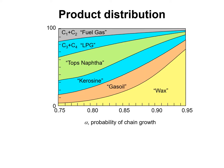Here is the graph showing the product distribution in a Fischer-Tropsch process. We produce a range of products from waxes, gas oil, kerosene, naphtha to LPG and fuel gas. Typically, it is desired to have a catalyst that produces a value of alpha that gives products in this range.